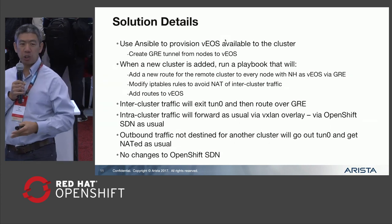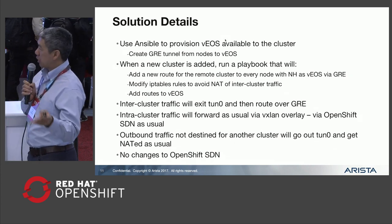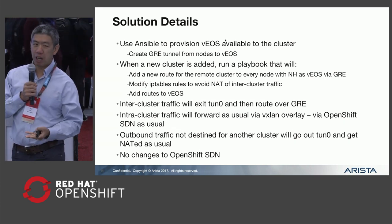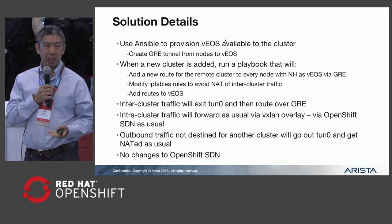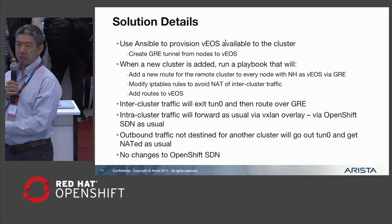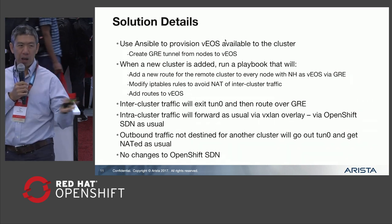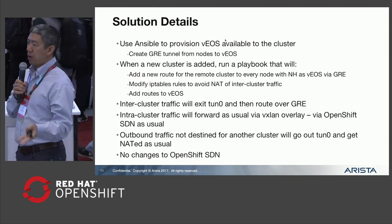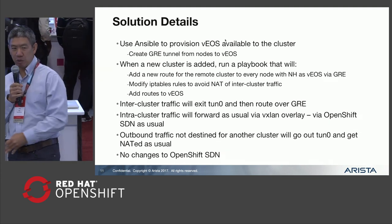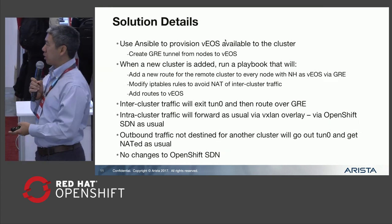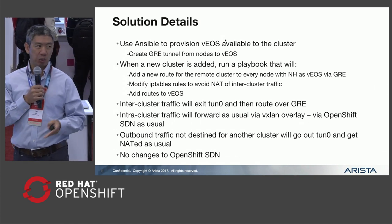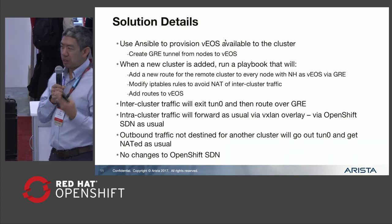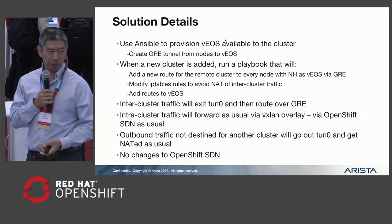For your inter-cluster traffic, it exits Tun0 and goes over the GRE interface. For intra-cluster traffic, you still go over your VXLAN overlay — the same mechanisms used for pod-to-pod traffic within a cluster remain unchanged. For outbound traffic not destined for a remote cluster, it goes out Tun0 and gets NATed as usual. There has been no modification whatsoever to the standard OpenShift SDN platform in this case.